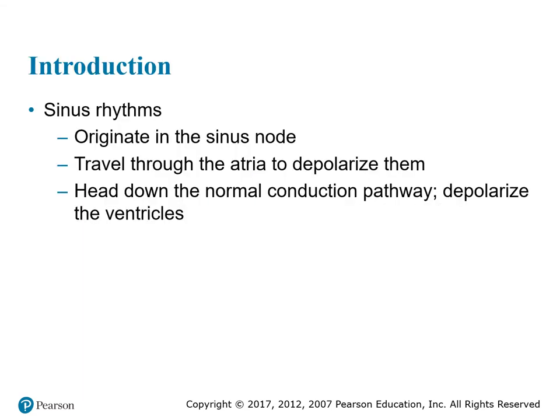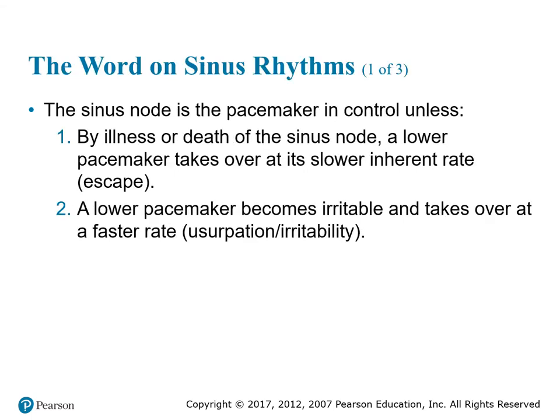Sinus rhythms originate from the impulse received from the sinus node, which travels to the atrium to depolarize them, heads down the normal conduction pathway, and depolarizes the ventricles. The normal heartbeat is the result of an electrical impulse that starts at the sinoatrial or SA node. Pacemaker cells within the SA node spontaneously depolarize more rapidly than other cardiac cells. The SA node usually dominates other areas that may be depolarizing at a slightly slower pace. The impulse is then sent to cells at the outside edge of the SA node and then to the myocardial cells of the surrounding atrium.